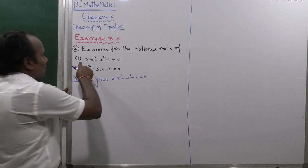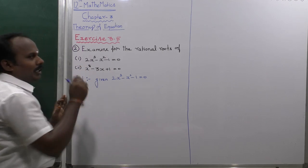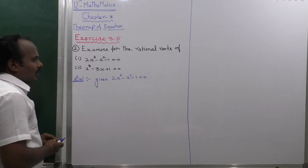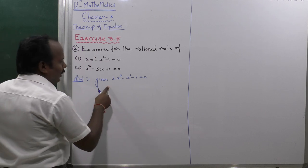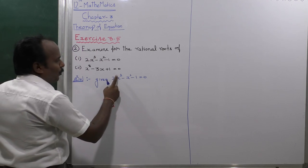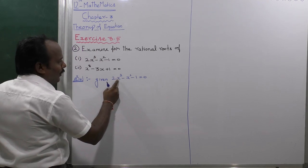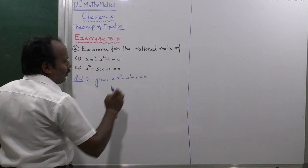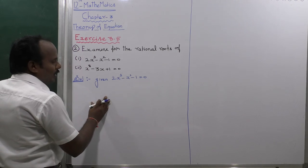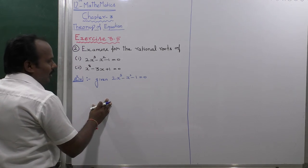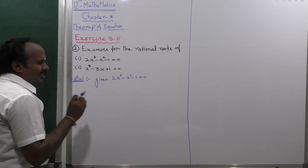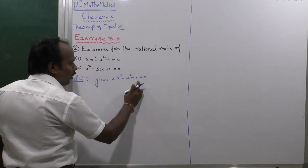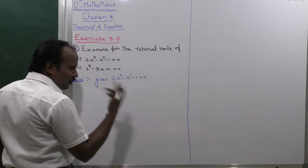The first one is solved by synthetic division. Given the equation 2x³ minus x² minus 1 equals 0, let us follow the synthetic division. The shortcut of synthetic division is: the sum of the coefficients is equal to 0.